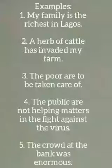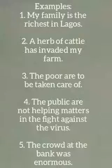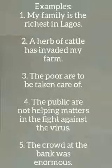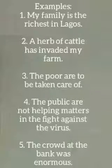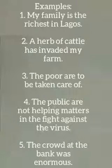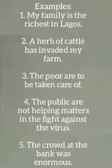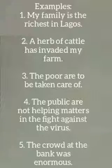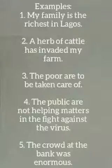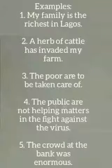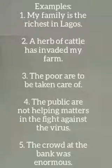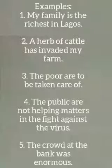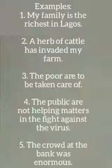For number one, the family are together as one unit, so we use is. Number two, a herd of them together, so has. The poor refers to different people with different problems, so are. The public are doing things in different ways — everybody reacting in their own different ways — so are. The crowd at the bank, a group seen as one unit, was enormous. Enormous means big.